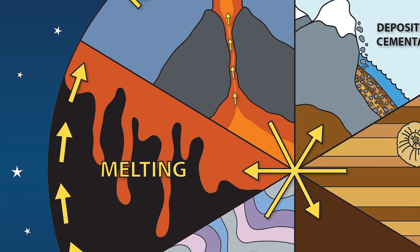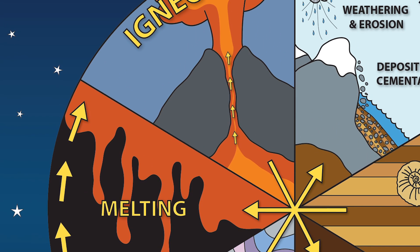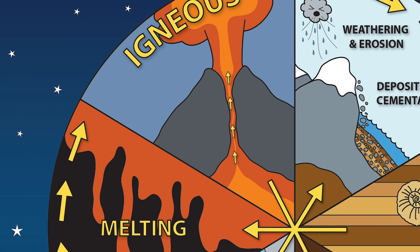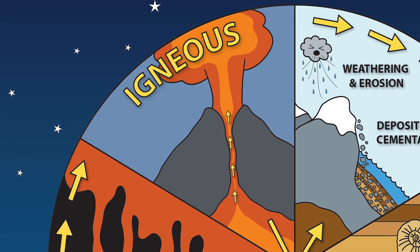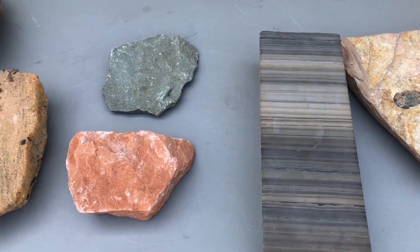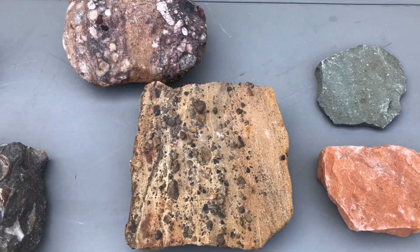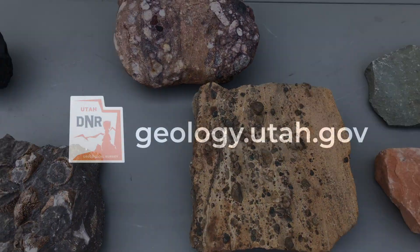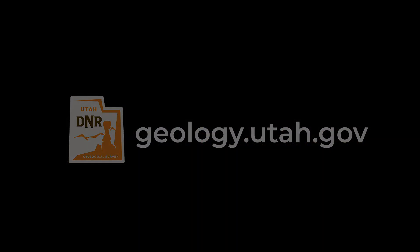Remember, igneous rocks are cooled and solidified from hot lava from a volcano or magma beneath the surface. Want to learn about sedimentary and metamorphic rocks and the minerals all rocks are made of? Please watch our other informative videos.